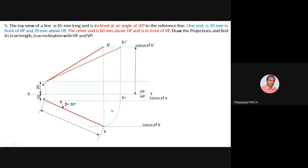If stuck, use the projector concept — both endpoints lie on the same projector. To complete the true length in the top view, use the front view: A-dash as center, B-dash as radius, draw an arc to cut the locus of A-dash, making it as point B2-dash.